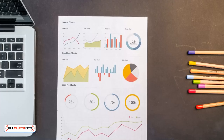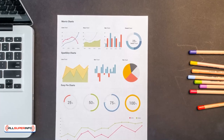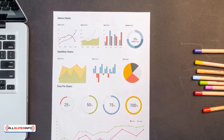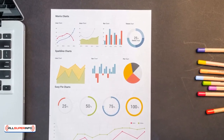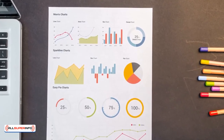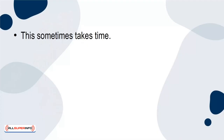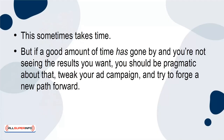Another tip to always keep in mind is that you should monitor your results, but also always be realistic. You may have created a killer ad and distributed it across all your social media platforms, but don't expect overnight success. This sometimes takes time. But if a good amount of time has gone by and you're not seeing the results you want, you should be pragmatic about that. Tweak your ad campaign and try to forge a new path forward. Be open to change.